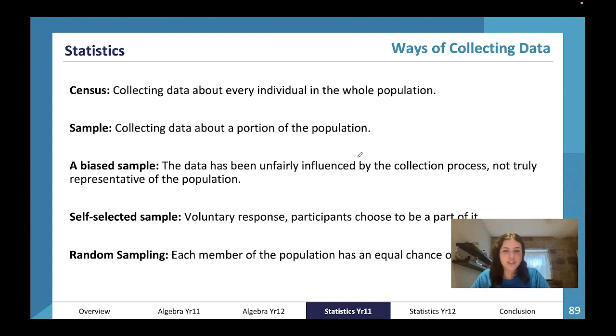A biased sample is data that has been unfairly influenced by the collection process, so it's not truly representative of the population. This might be if we interview people about whether they like reality TV but only interview people who we know like reality TV. A self-selected sample is when there's a voluntary response, like posting a survey on your school forum and people choose to fill it out. Random sampling is when every member of a population has an equal chance of being selected, like picking five names out of a hat.